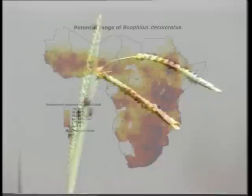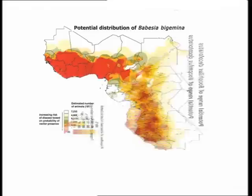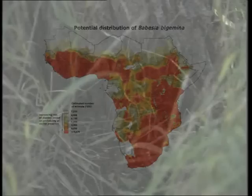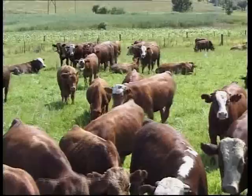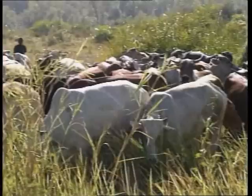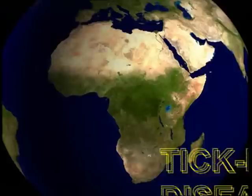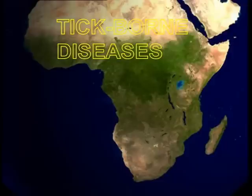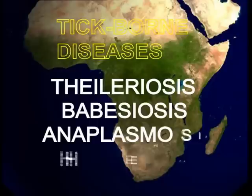Although the distribution of the specific tick or ticks that transmit a particular parasite usually defines the distribution of that particular tick-borne disease, this may vary greatly over time. For example, climatic changes, such as successive years of above average rainfall, may render certain areas temporarily well suited to a specific tick, thus allowing it to gradually extend its range into areas where it, and the diseases it transmits, previously did not occur. In this video production, the most important tick-borne diseases of cattle in Africa south of the Sahara — in particular theileriosis, babesiosis, anaplasmosis and heartwater — will be briefly discussed.